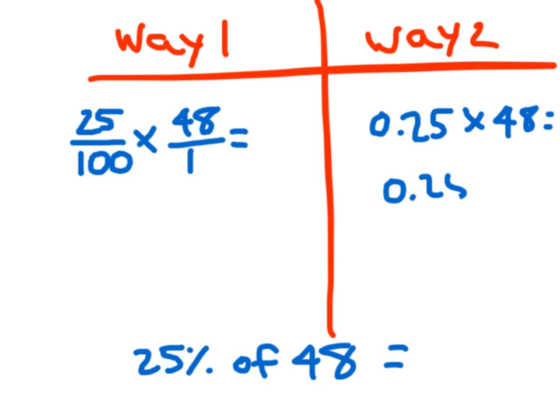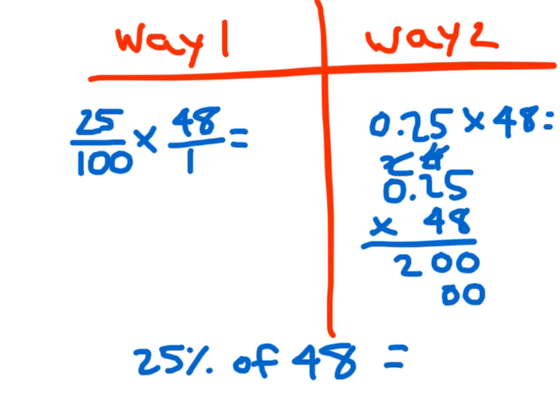If I rewrite that, it'll be a little bit easier for me to solve. 8 times 5 is 40, regroup a 4. 8 times 2 is 16, plus 4 is 20. Regroup a 2. 8 times 0 is 0, plus 2 is 2. Place a 0. 4 times 5 is 20, regroup a 2. 4 times 2 is 8, plus 2 is 10, and regroup a 1.